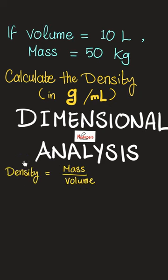I hope you already know that density is mass over volume. So what's the mass that I have? 50 kilograms. And what's my volume? 10 liters. You cancel these two together and you end up with 5 kilograms per liter.